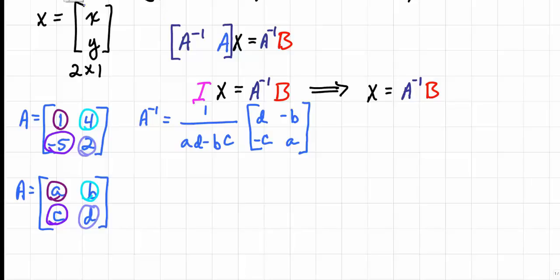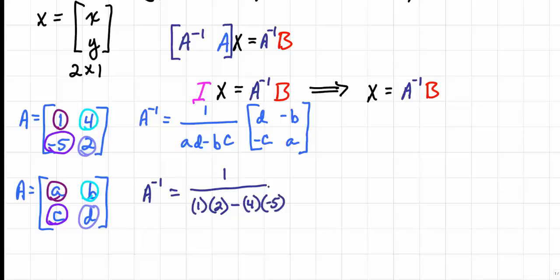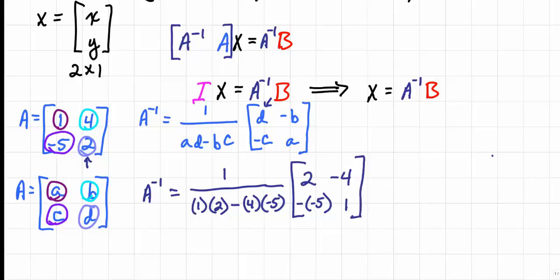Let's calculate A inverse. It equals 1 over (1 times 2 minus 4 times negative 5), multiplied by the matrix with entries D=2, negative B = negative 4, negative C = negative negative 5, and A = 1. The denominator simplifies to 1 times 2 minus 4 times negative 5, which equals 22. So we have 1 over 22 times the matrix [2, negative 4; 5, 1].